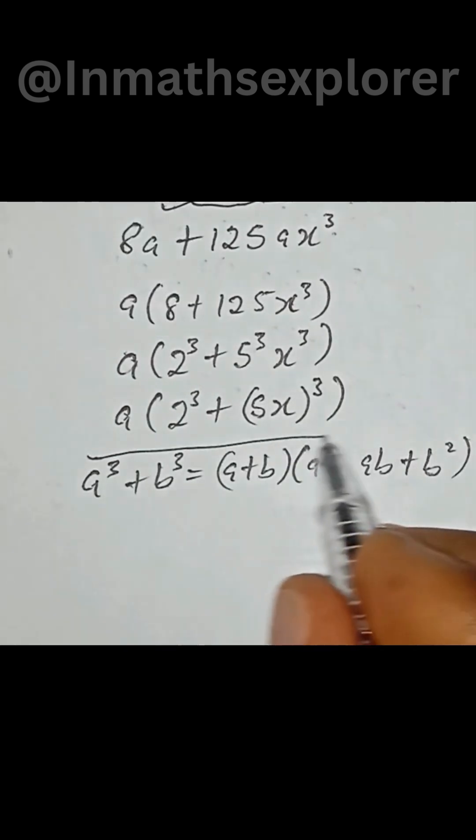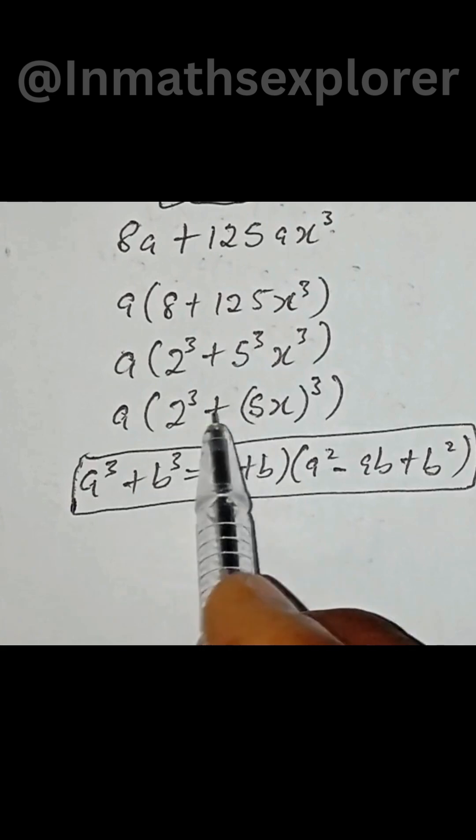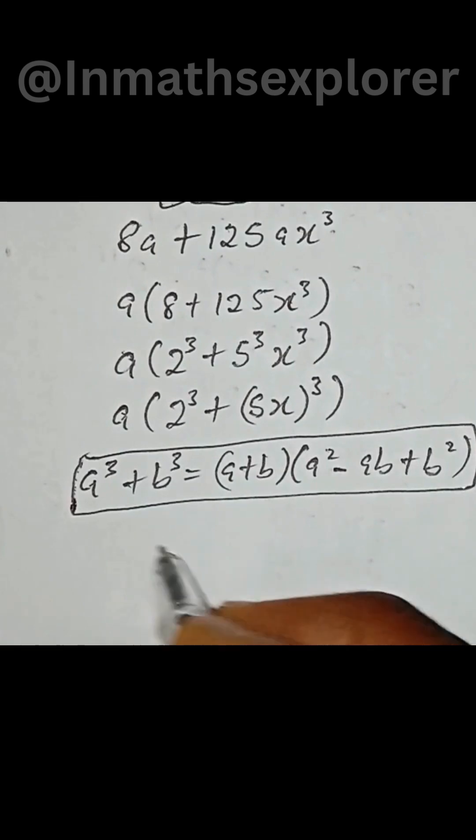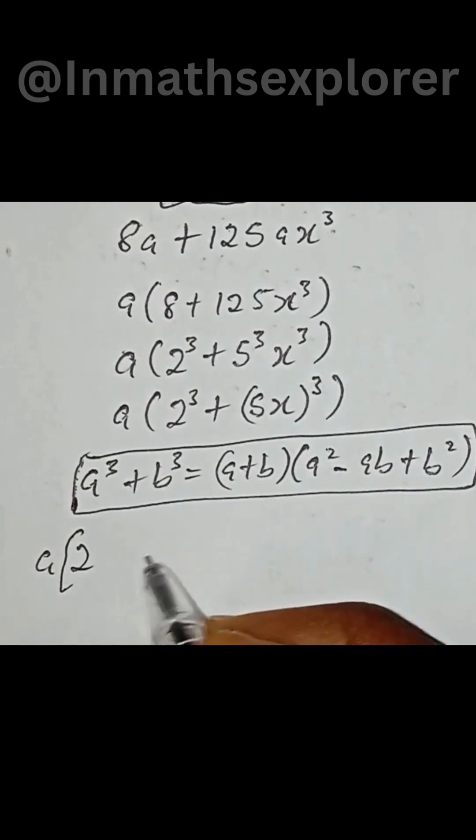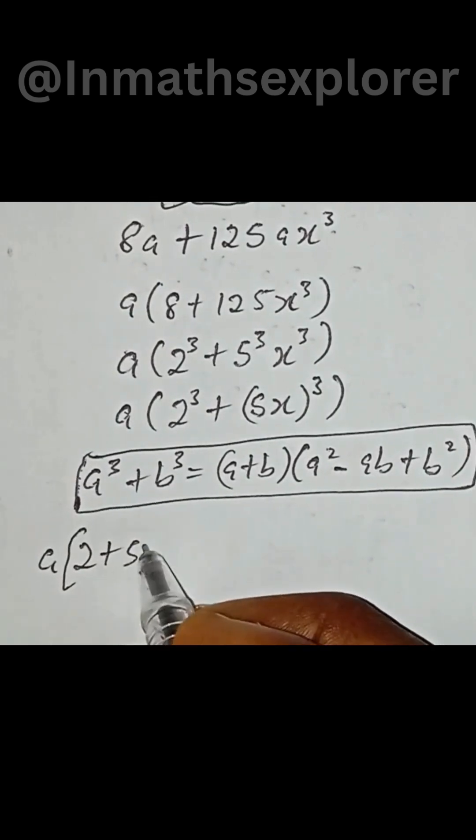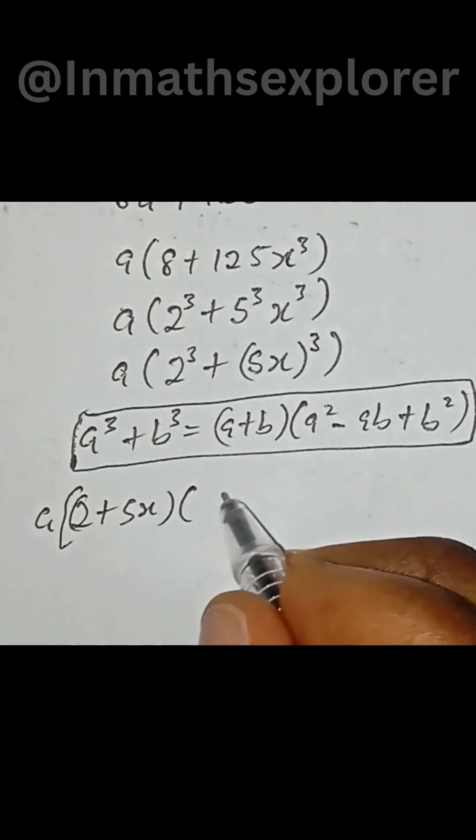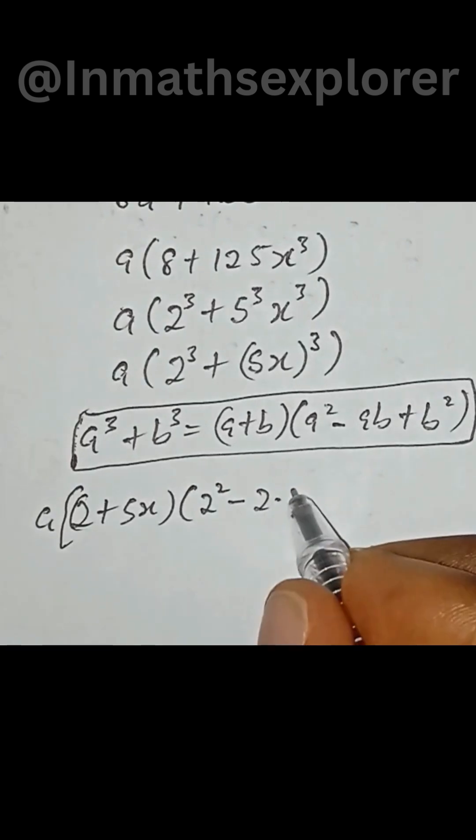Okay, so if we consider this identity we can use it to factorize this. Then this implies that our a first, a outside, then we have 2 plus 5x into brackets then 2 to the power of 2 minus 2.